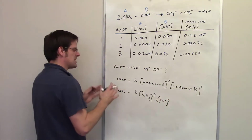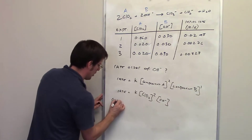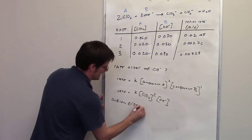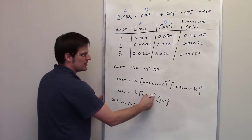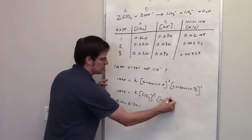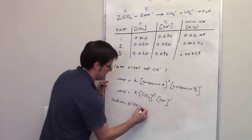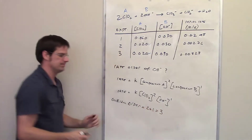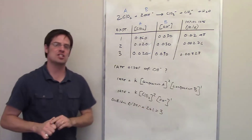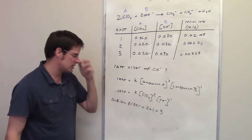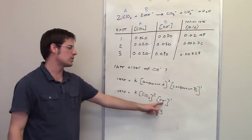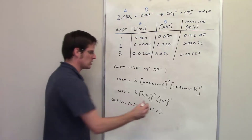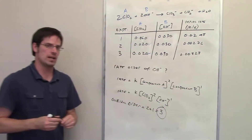The overall rate order is found by taking the exponents 2 and 1 and adding them together: 2 plus 1 equals 3. We would say that this reaction is second order with respect to chlorine dioxide, first order with respect to hydroxide, and the overall order is 3.